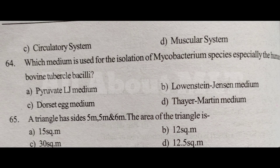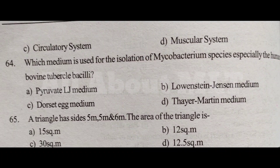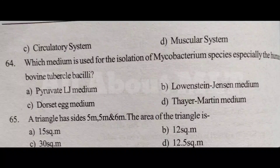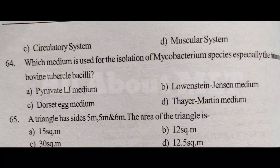A triangle has sides 5m, 5m and 6m. The area of the triangle is Option A 15m², Option B 12m², Option C 30m², Option D 12.5m². Answer is Option B 12m².